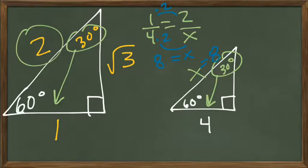So I know the hypotenuse is 8, and we'll call this side y, because I don't know what y is. So using my same scale factor,